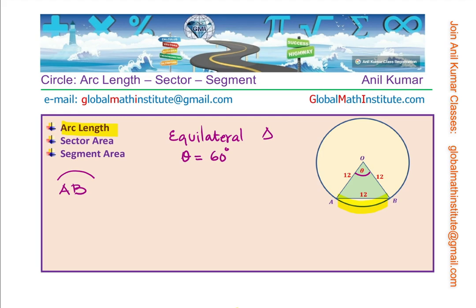So in an equilateral triangle the angle theta has to be 60 degrees, 180 divided by 3. We know angle theta is 60 degrees and now we can find arc length as a ratio of 60 over 360, which is full circle, times 2πr, which is the circumference.